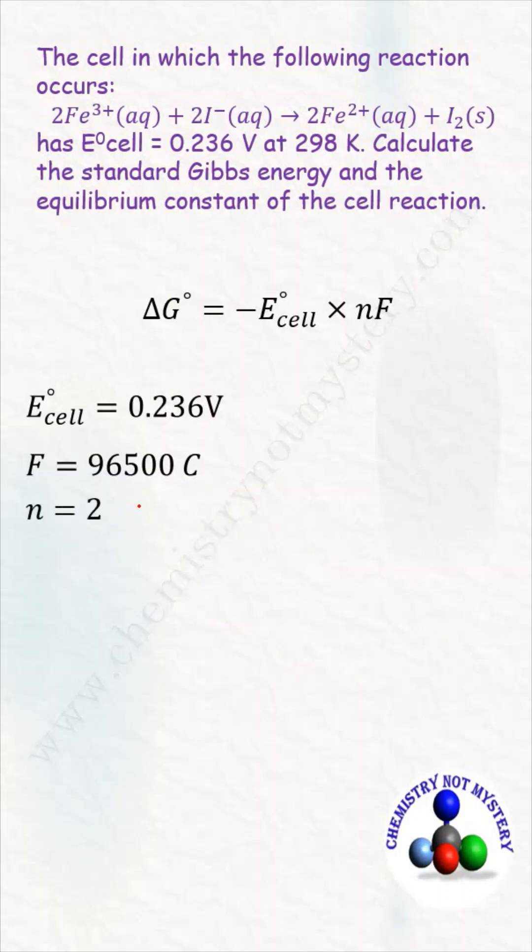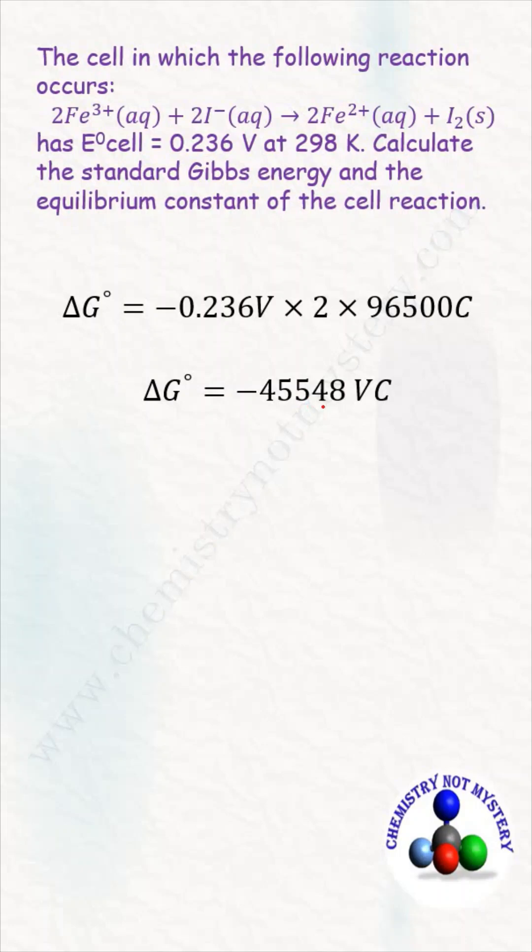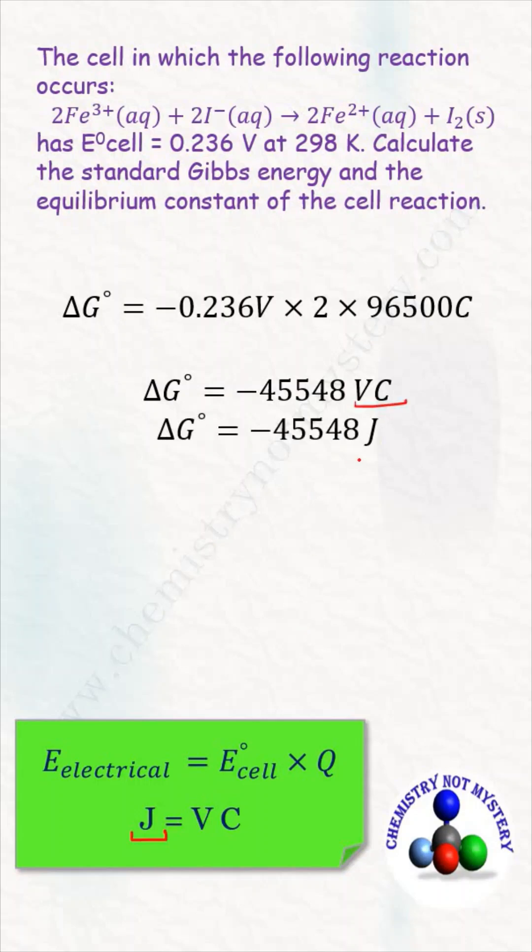Now we know the value of n. When you place these values in the above formula, you will get this equation. When you solve this equation you will get -45548 V·C. And we know volt coulomb can be replaced with joules.